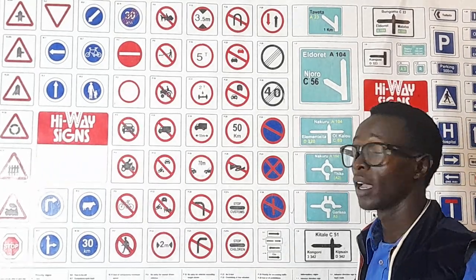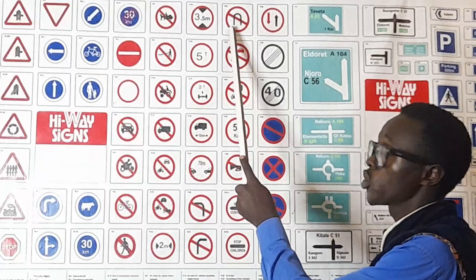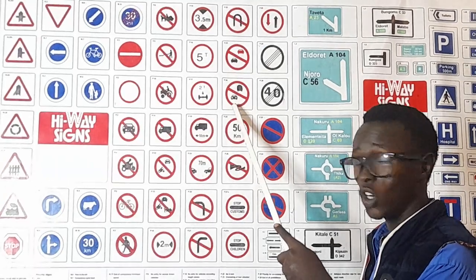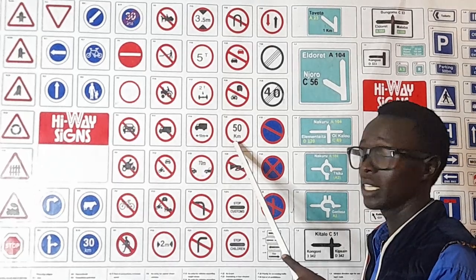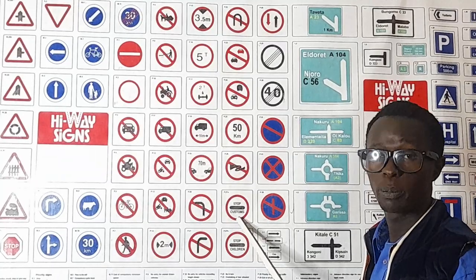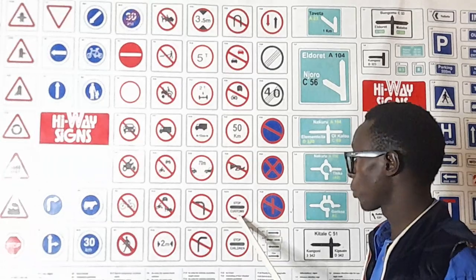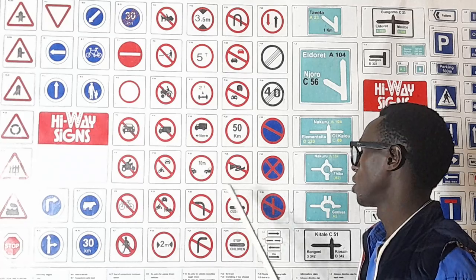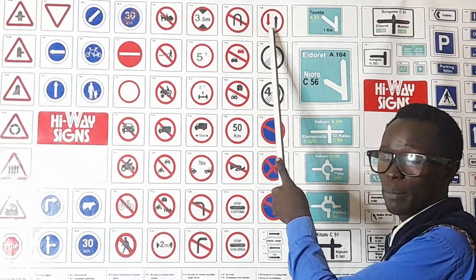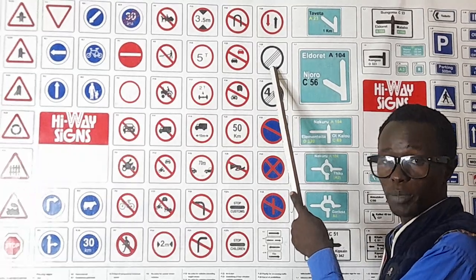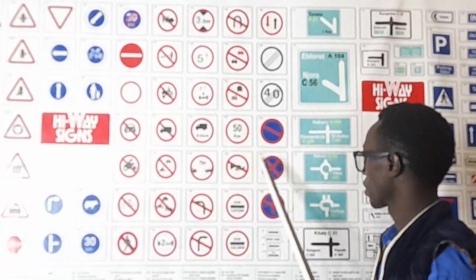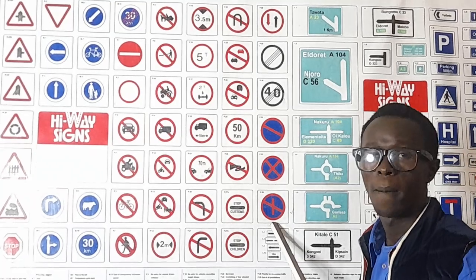Stop children crossing. No U-turn. No overtaking for saloon vehicles. No overtaking for heavy commercial vehicles. Maximum speed limit. Stop at police check or stop post. Stop children crossing. Priority for incoming traffic. End of all prohibitions. End of speed limit. No parking. No parking, no waiting. Controlled parking zone.